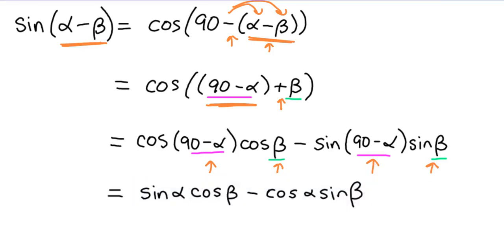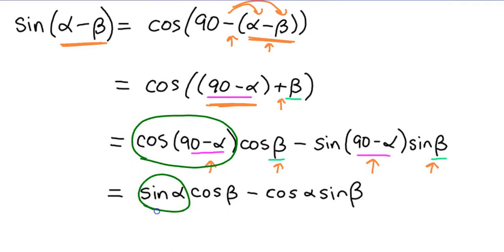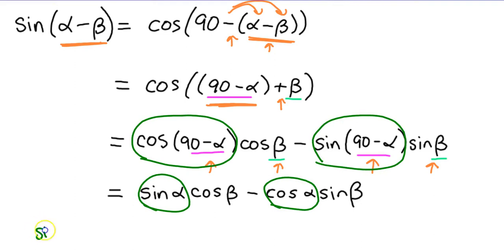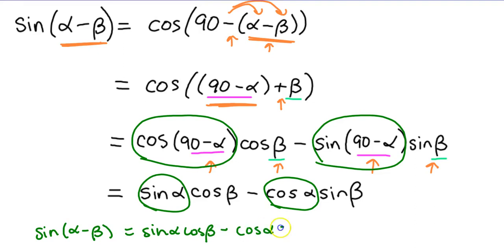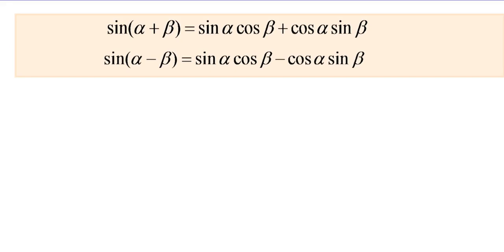Then we use our co-function identities one more time. The cosine of 90 minus alpha is equal to the sine of alpha, and the sine of 90 minus alpha is equal to the cosine of alpha. So we substitute those in, and now we have the sine of alpha minus beta equals sine alpha cosine beta minus cosine alpha sine beta. So here are the two sum and difference identities for sine.